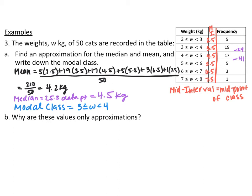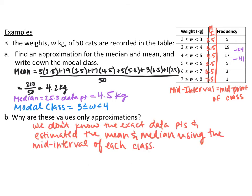Answer the last question: why are these values only approximations? As discussed, these are approximations because we weren't given every single weight of all 50 cats. We estimated using the mid-interval value, so these are just approximations for the mean and the median — not the exact values.